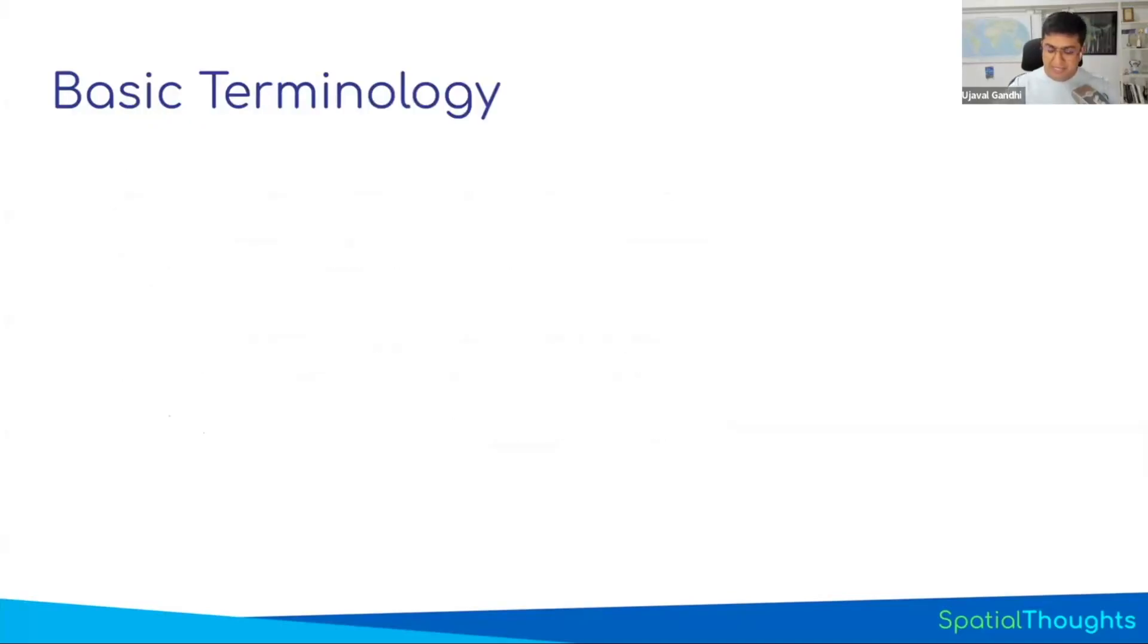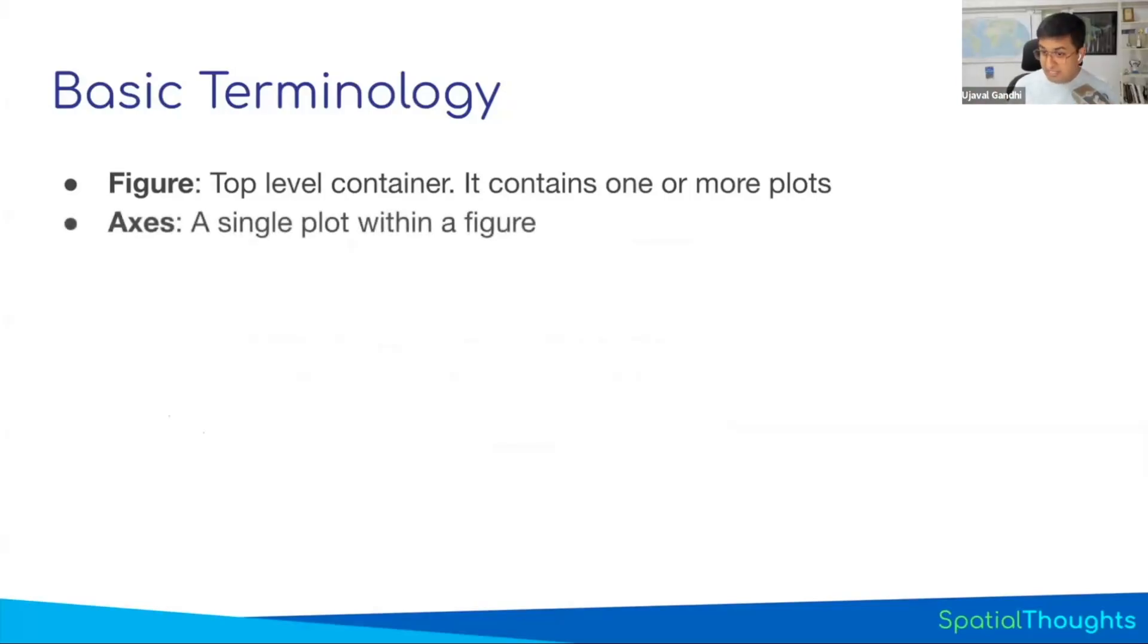In Matplotlib, when you create a plot, you will get something called a figure. Matplotlib calls whatever image it creates as a figure. So it's a top-level container. It can contain one or more plots. It can create five maps, one chart, or two charts. The figure is a top-level container. Within that, you have individual plots.